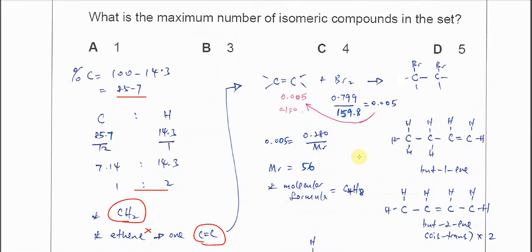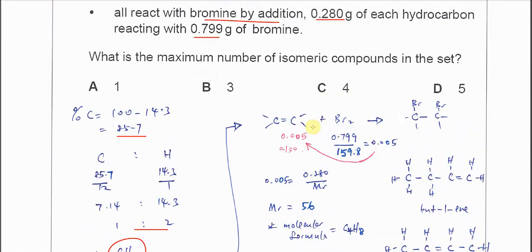From this equation, one mole of bromine will react with one C=C double bond.